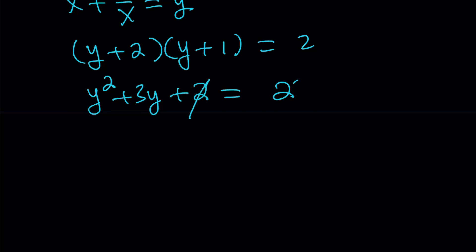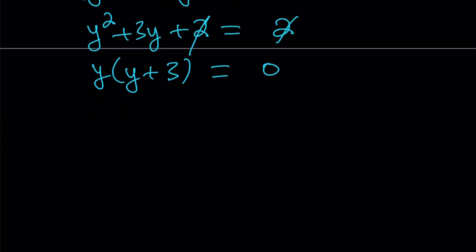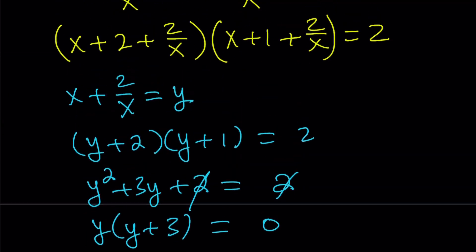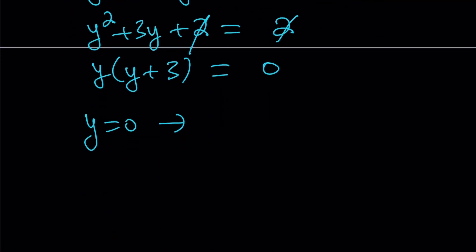But anyways, so 2 cancels out, and we get a really nice quadratic, like this is awesome, isn't it? And from here, we get two solutions, y equals 0. Let's see where y equals 0 takes us, because we have x plus 2 over x equals 0. And obviously, this is going to give us the complex solutions, because this ends up being x squared plus 2 is equal to 0. And as you know, the results are the same.